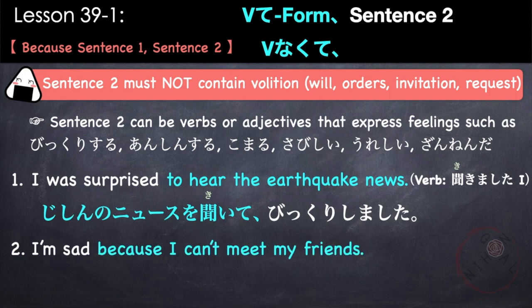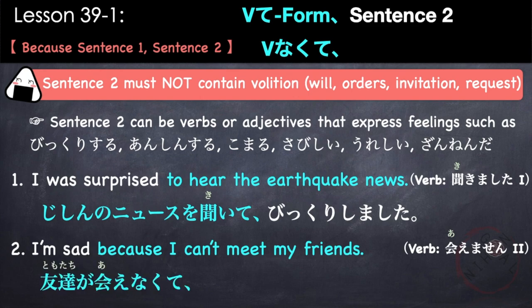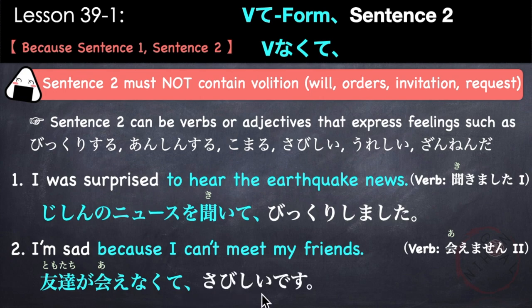Another example: I'm sad because I can't meet my friends. The verb is aimasen (can't meet). We use the nai-form: remove i, add kute → aenakute. So: 友達が会えなくて、寂しいです。 Tomodachi ga aenakute sabishii desu.